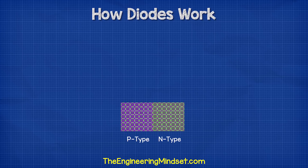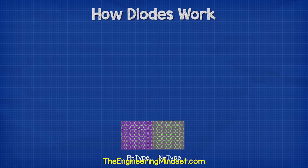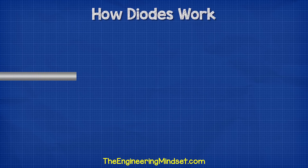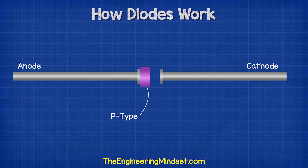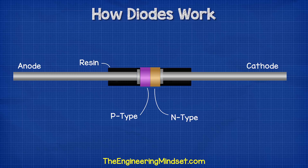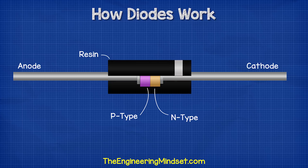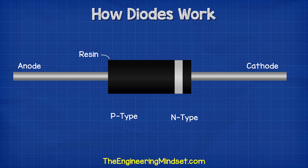We combine these doped materials to form the diode. Inside the diode we have the two leads, the anode and the cathode, which connect to some thin plates. Between these plates there is a layer of P-type doped silicon on the anode side and a layer of N-type doped silicon on the cathode side. The whole thing is enclosed in a resin to insulate and protect the materials.